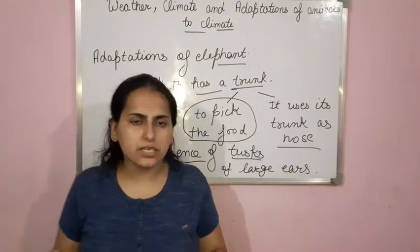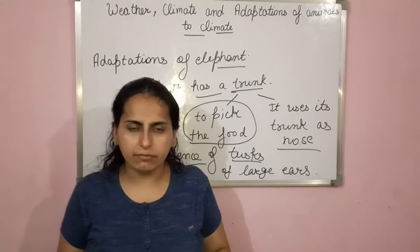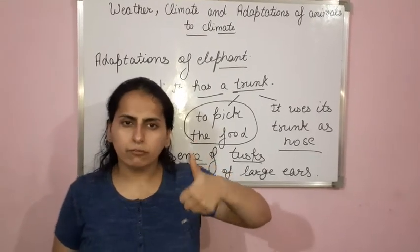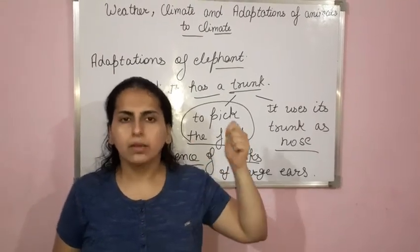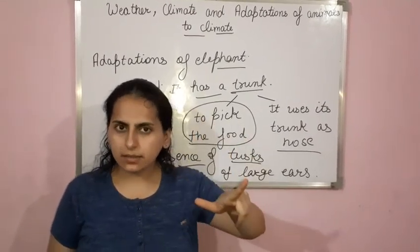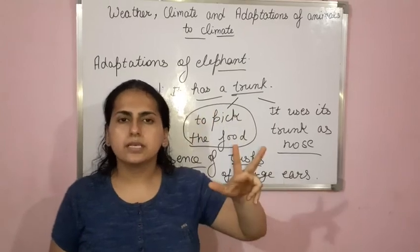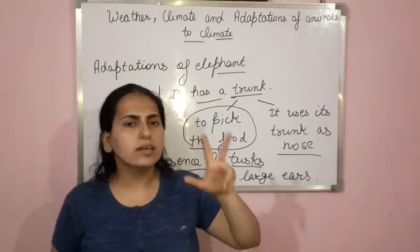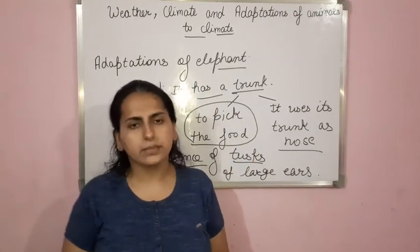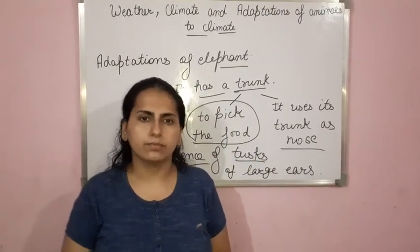So these are the adaptations of elephant: presence of trunk, presence of tusks, and presence of large ears. Thank you.